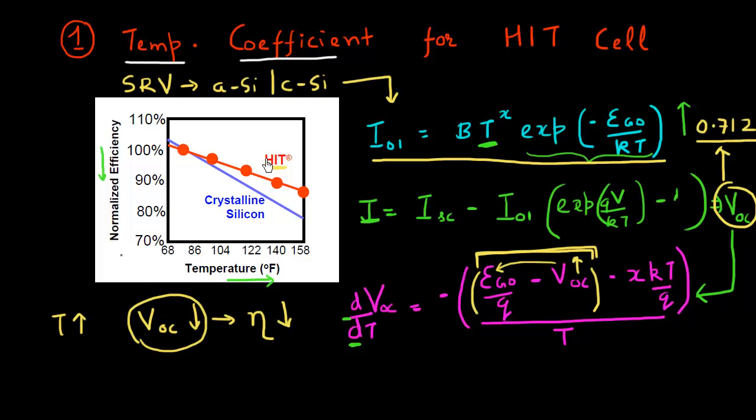The HIT cell has a very good temperature coefficient for efficiency. In a normal crystalline silicon based cell, your efficiency decreases by approximately 0.45% for every degree increase in temperature. So if you have 10 degree increase in the operating temperature of the cell, your efficiency would decrease by 4.5%.